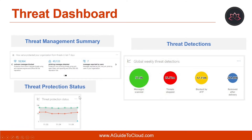Then we have threat protection status. The threat protection status widget shows the threat protection effectiveness with a trending and detailed view of phish and malware. The details depend on whether your Office 365 subscription includes Exchange Online Protection with or without Office 365 Advanced Threat Protection.